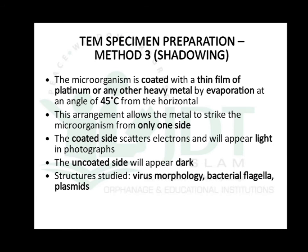The third method is shadowing. The microorganism is coated with a thin film of platinum or another heavy metal by evaporation at an angle of 45 degrees from the horizontal. This arrangement allows the metal to coat the microorganism from only one side. The coated side scatters electrons and appears light in the microscope, while the uncoated side appears dark. Shadowing is used to study virus morphology, bacterial flagella, and plasmids.